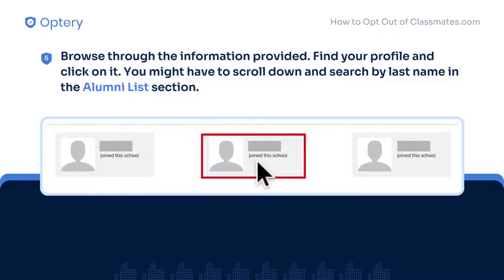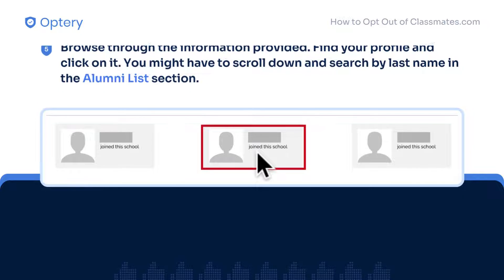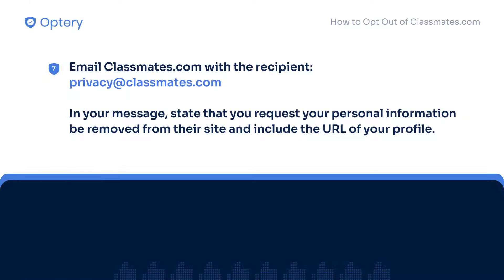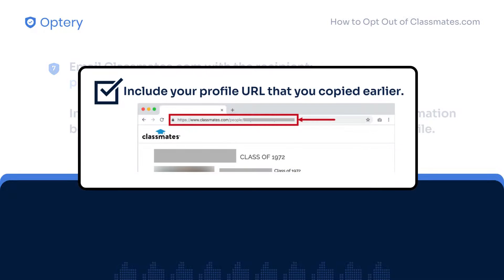Browse through the page, find your profile, and click on it. You might have to search in the Alumni List section if necessary. Next, you need to copy your profile URL for the following step. And lastly, send an email message to Classmates.com using the email address provided on your screen. State in your email message that you are requesting for your personal information to be removed from their site. More importantly, include and paste the URL of your profile that you copied in the previous step.